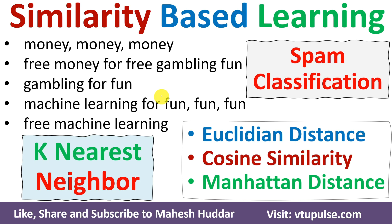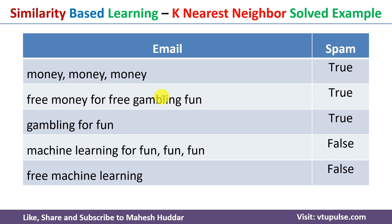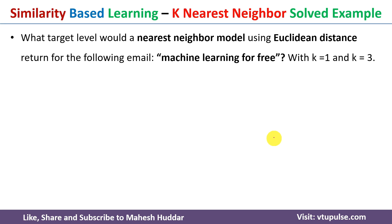Welcome back. In this video I will discuss how to use similarity-based or K-Nearest Neighbor learning algorithm to classify spam examples. There are five emails given to us with associated labels — the first three are spam and the remaining two are non-spam. We need to apply the nearest neighbor model with Euclidean distance to classify a new example, 'machine learning for free,' with k=1 and k=3.